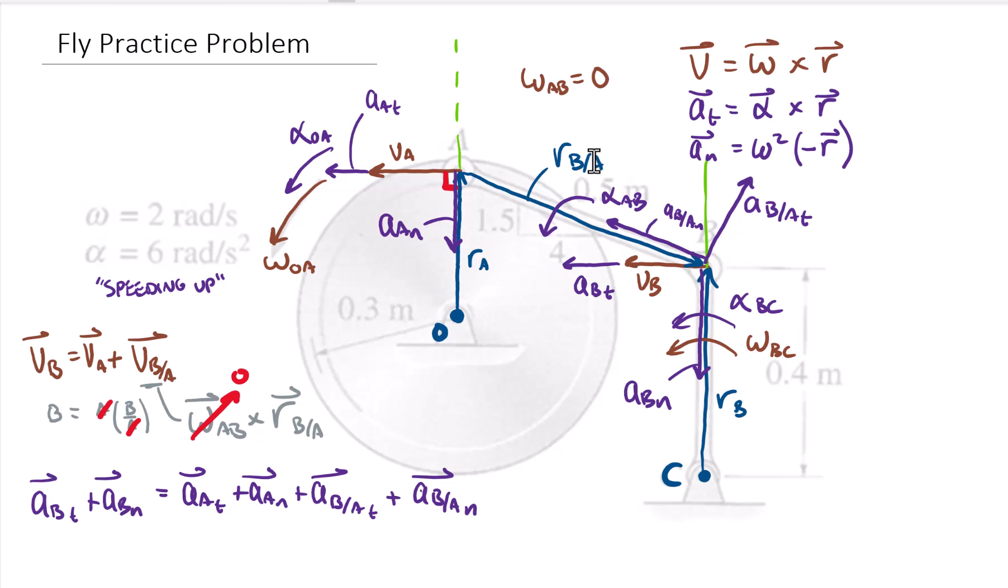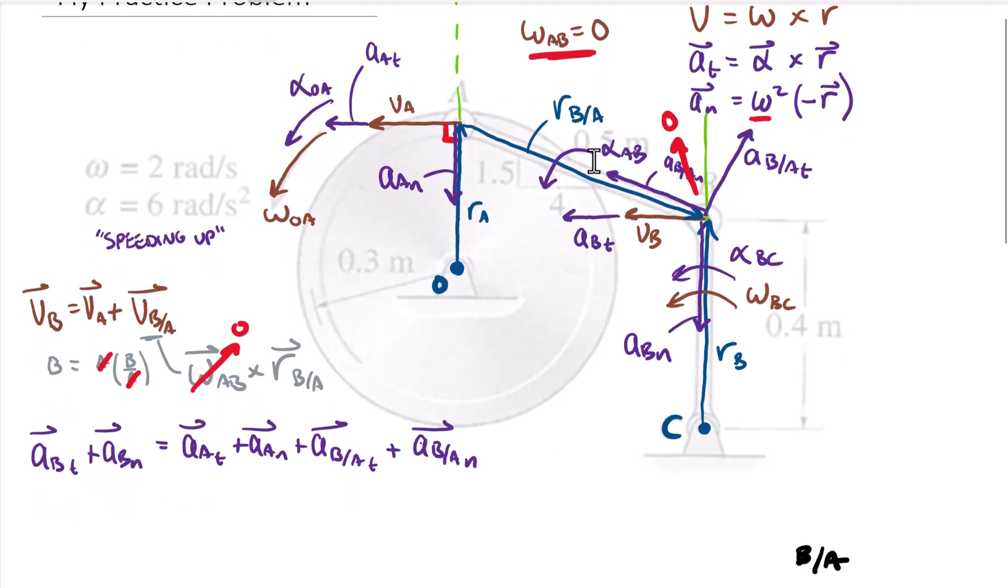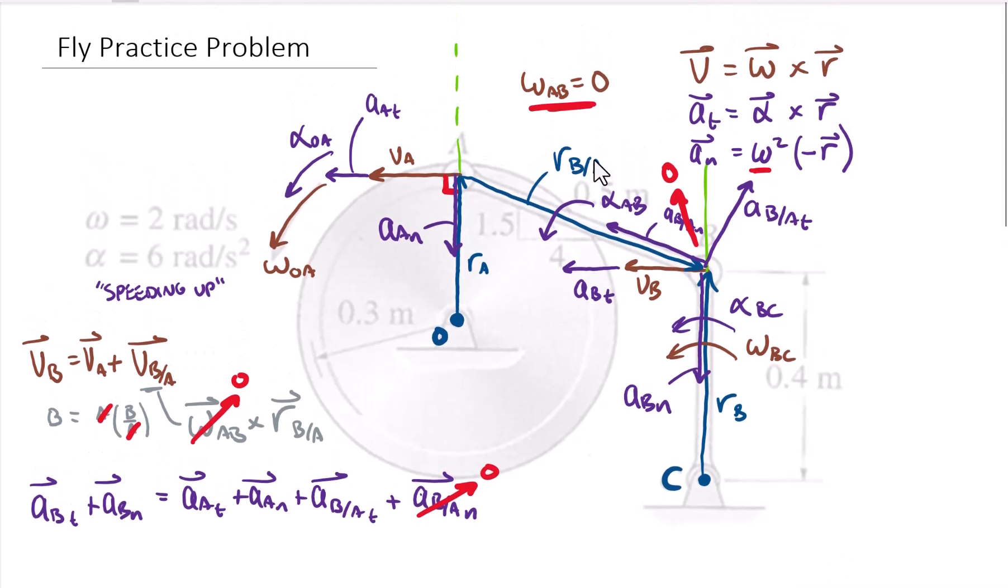Now one thing to note, because of the motion in this system, we said here that the omega of AB was zero. Notice the normal acceleration of body AB is based upon that omega. Therefore, this term for this problem goes to zero. Again, only because the omega goes to zero for this problem does that term go away. So now we've included all of the terms that are non-zero. This term goes to zero as omega of body AB is equal to zero.